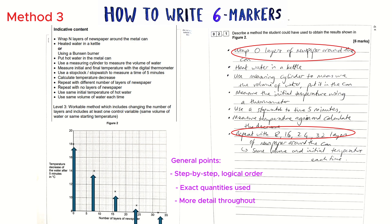This person's been really clever and looked at the graph and said it tells me exactly how many newspaper layers I need to wrap, so I'm going to mention those in my answer rather than just saying add more newspaper. They've also talked about using a kettle to heat the water, a measuring cylinder to measure the volume, a stopwatch to measure the five minutes, measuring the temperature, calculating the decrease, and that the repeats have to be at the same volume and the same initial temperature.